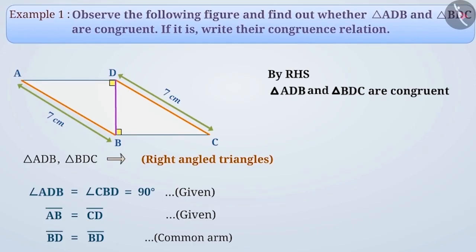So, let us symbolically write the relation of their congruence. Can we write this as triangle ADB is congruent to triangle BDC? Give it a thought. Absolutely right. We cannot write it like this. In order to be properly indicated in a symbolic way, we have to understand the relation of congruency. Here, angle ADB is equal to angle CBD is equal to 90 degrees.